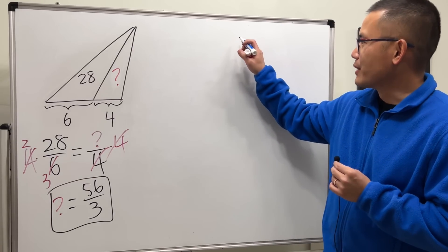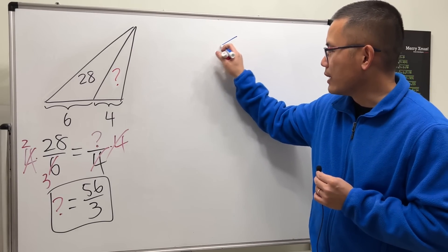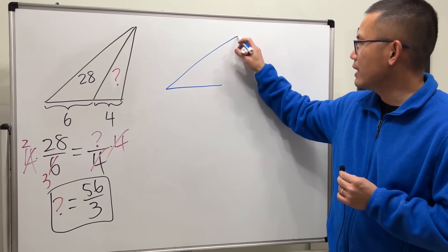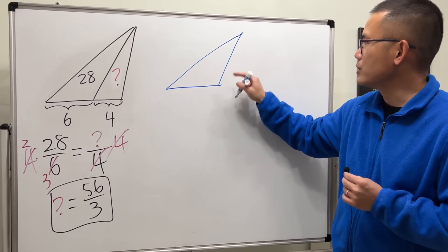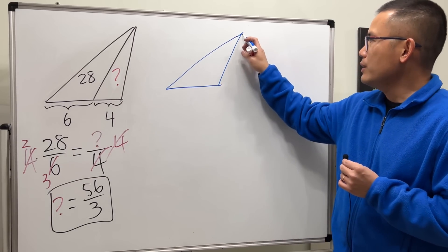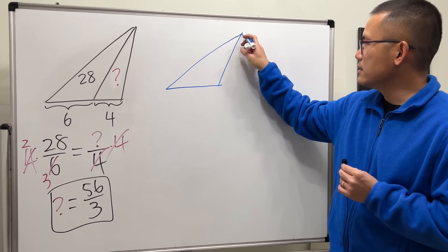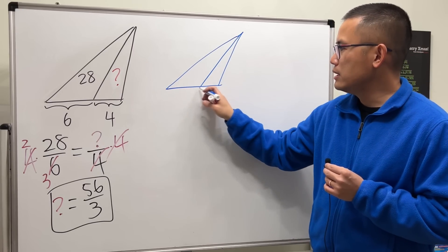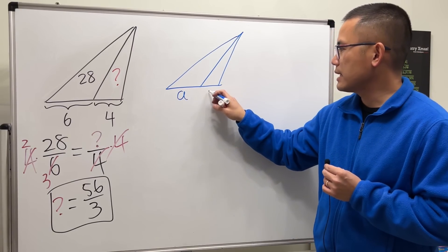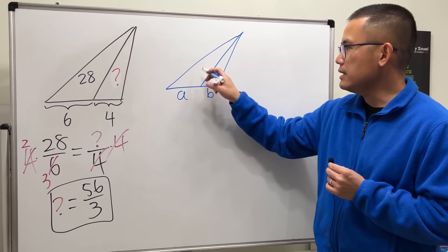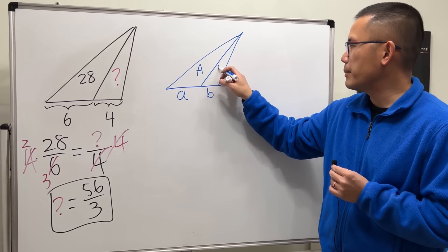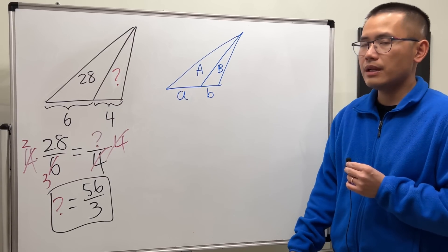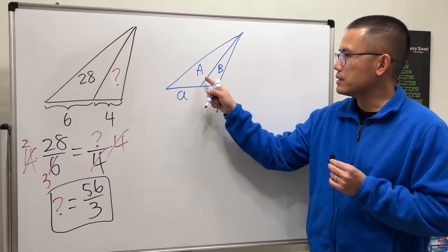Now here's the proof. Whenever you have a triangle, it doesn't really have to be a right triangle. Go ahead and draw a segment connecting from one vertex to the other side like this. I'm going to call this side right here little a, this side right here little b, and then this area capital A, this capital B.